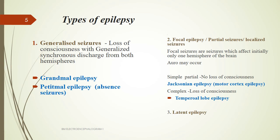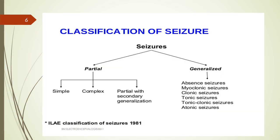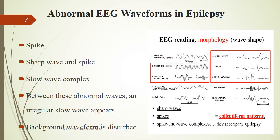Here you can see the classification of seizures. The abnormal waveforms you can see in epilepsy include spikes, sharp waves, spike-and-wave complexes, and irregular slow waves. The background waveform can be disrupted between these abnormal waves.